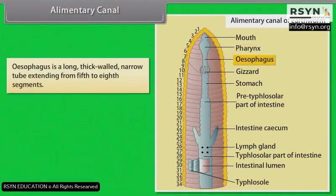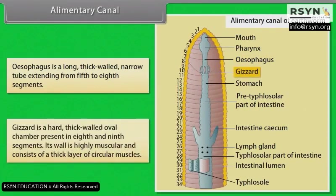The oesophagus is a long, thick-walled, narrow tube extending from the fifth to eighth segment. The gizzard is a hard, thick-walled oval chamber present in the eighth and ninth segments. Its wall is highly muscular and consists of a thick layer of circular muscles.